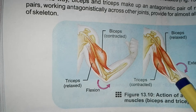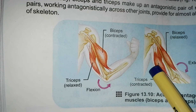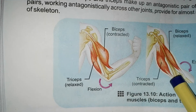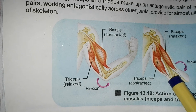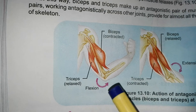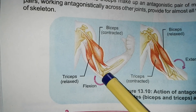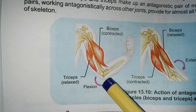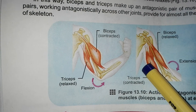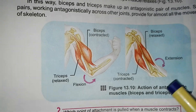When a muscle contracts and the joint straightens, that muscle is called an extensor and the movement is called extension. So: flexion = joint bent; extension = joint straightened.